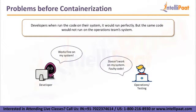Now, problems before containerization. When containerization was not there, developers would run code on their system and it ran perfectly, but the same code would not run on the operations team's system. This is a common use case in every organization. The developer is able to run their code on their laptop or desktop, but sometimes that code won't run in the production environment. Why? Because you can't install unauthorized software, can't blindly upgrade software, and can't give permissions blindly to users. There are a lot of restrictions on machines hosting applications in a production environment.